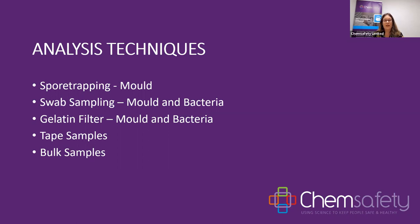Gelatin filters are another air sampling technique. We draw air through a gelatin filter using an air sampling pump and send that off to the laboratory as well. The gelatin filter is diluted and cultured, and the mould and bacteria species that grow up in that culture are identified and counted. This technique only looks for viable species, but it gives us an indication of what bacterial species are present, which is really useful when assessing the HVAC system of a building.